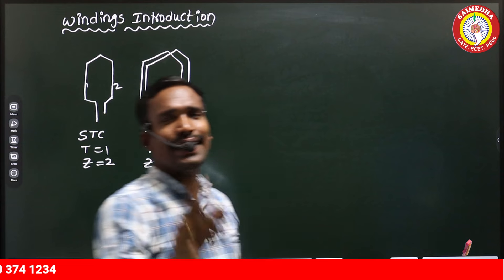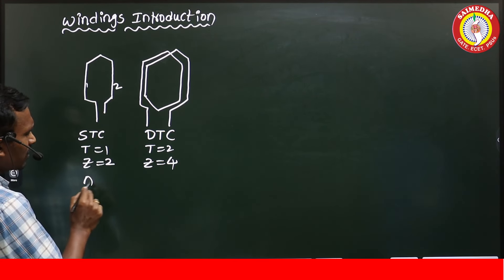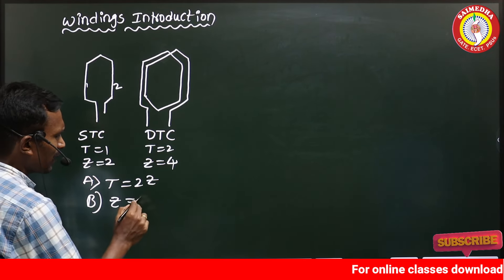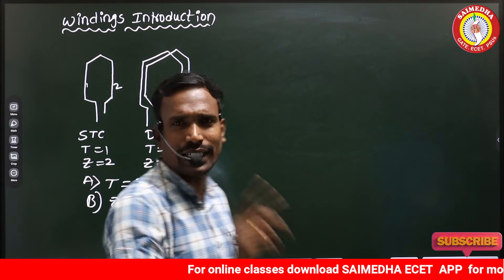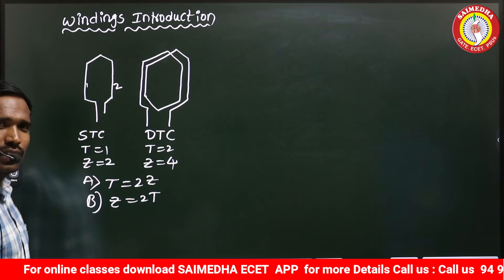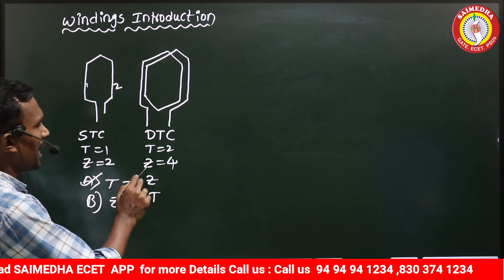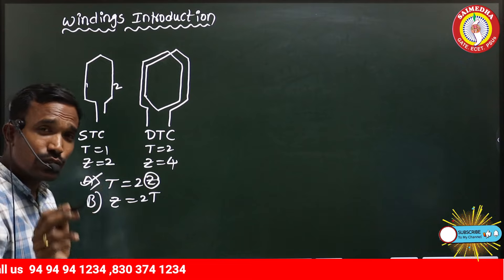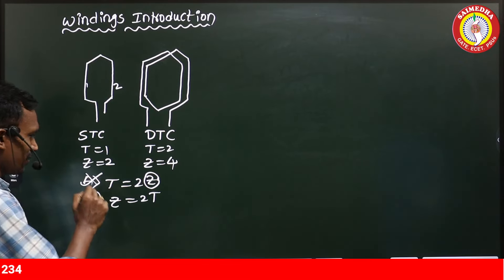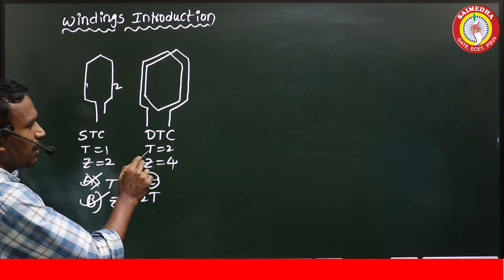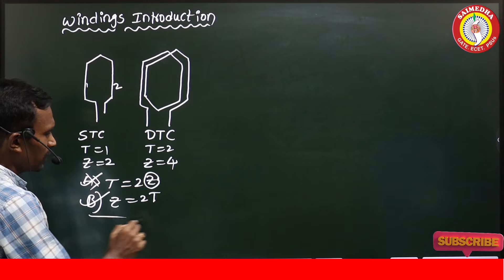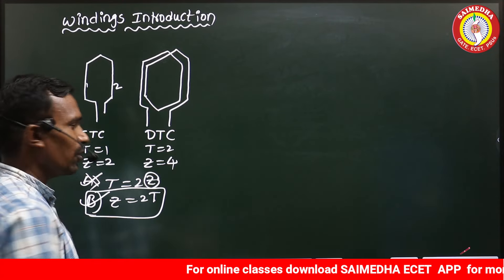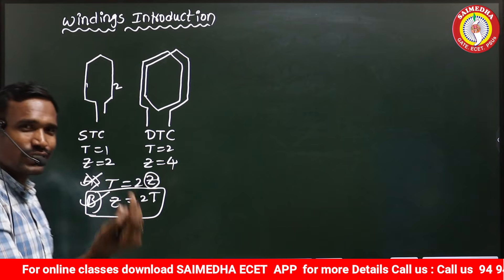Each turn has two conductors. Which of the following is the correct answer? For example, if we have four conductors and substitute into option A, two times four gives eight turns — that is wrong. Coming to option B, if T equals two, then two times two equals four conductors. So the correct answer is Z equals two times T. Don't confuse the mathematics with the English phrasing — one turn having two conductors means Z = 2T.